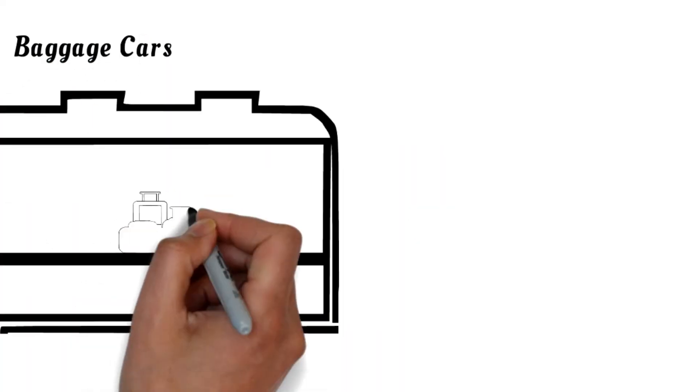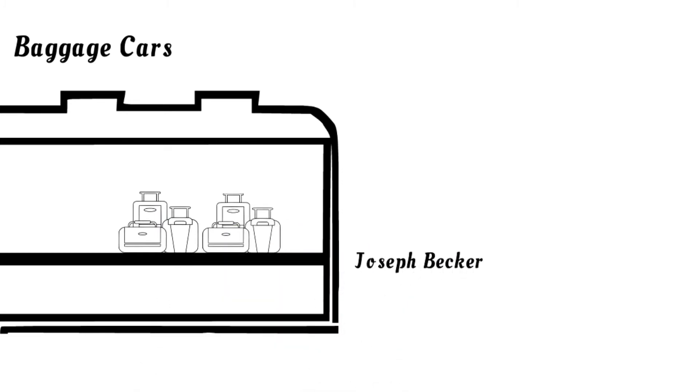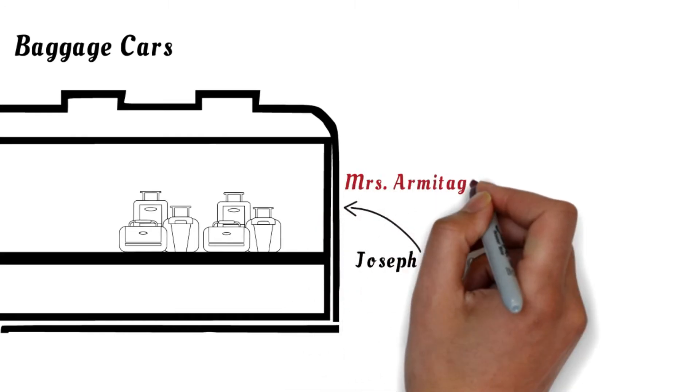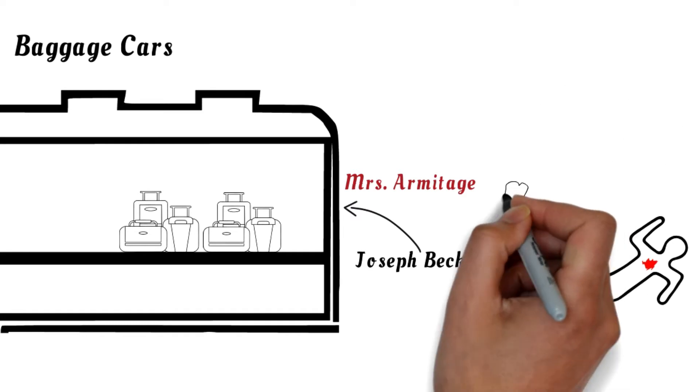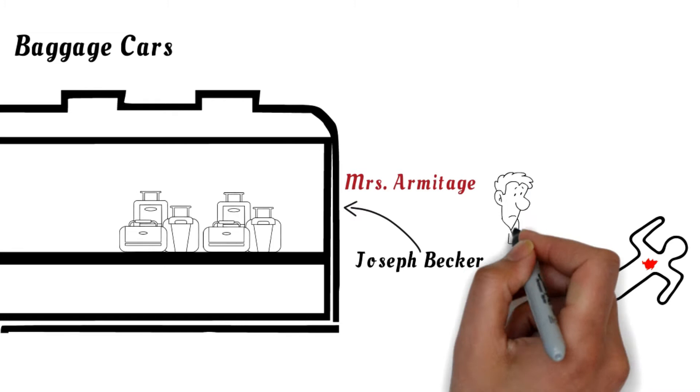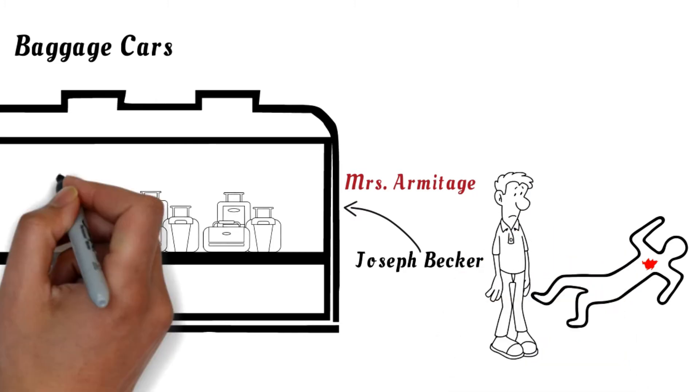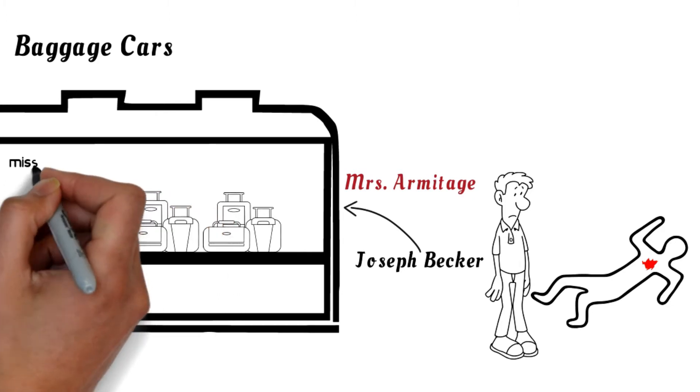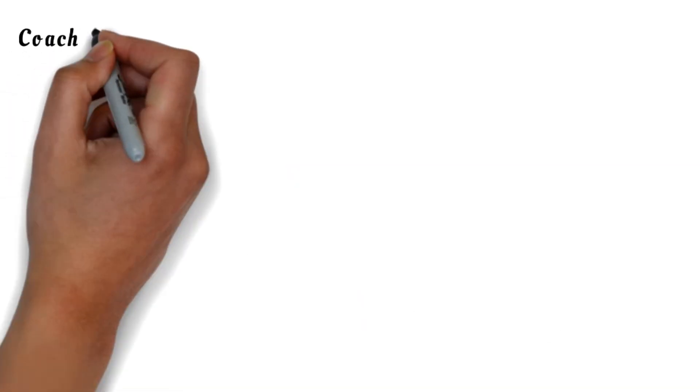You'll also have to check the baggage car. Joseph Becker, the train's new conductor, is there securing passenger luggage. He claims he was sent by Mrs. Armitage to collect her baggage and had trouble finding it when the commotion began. Mr. Becker was the first at the scene after the body was found and notified the investigators. Once the investigation started, he returned to the baggage car to locate her missing baggage.